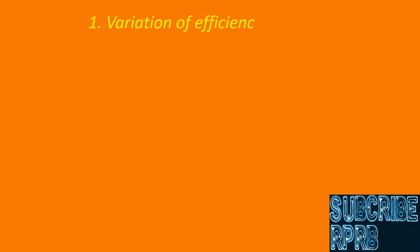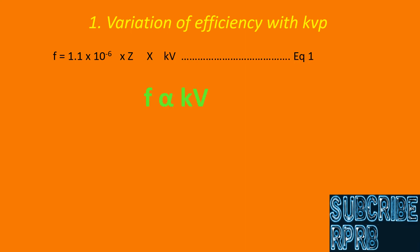Variation of efficiency with kVp. From the above equation, we can say efficiency is directly proportional to applied kV. That means efficiency of X-ray production increases with kV, and heat production percentage will decrease with kV.